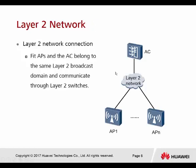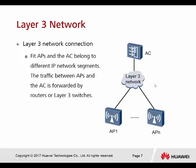In Layer 2 networking, the FAT AP and the AC belong to the same Layer 2 broadcast domain. The AC and AP connect through the same VLAN, so we call it a Layer 2 network. For Layer 3, the FIT AP and AC belong to different IP network segments, and traffic between them is forwarded by a router or Layer 3 switch. When we configure different VLANs on the AP and the controller, we call this a Layer 3 network.